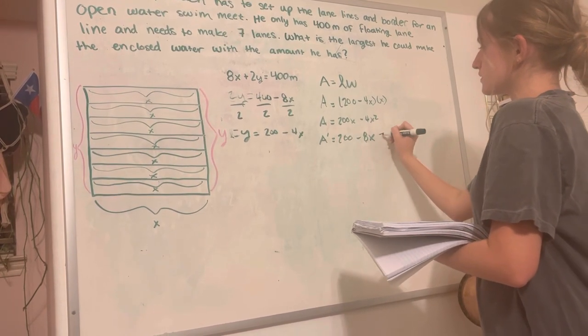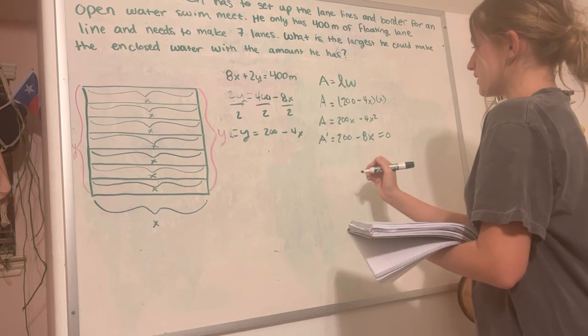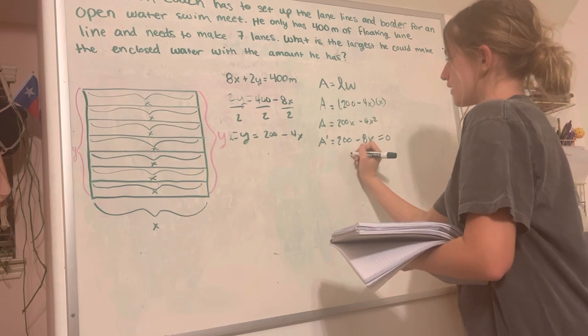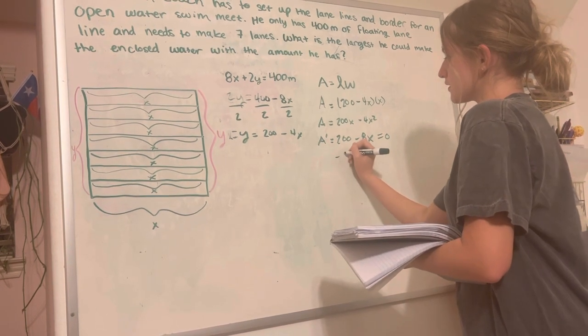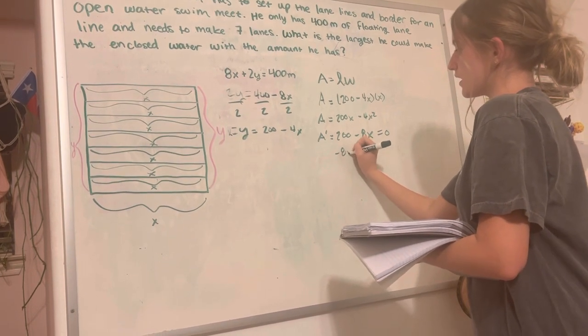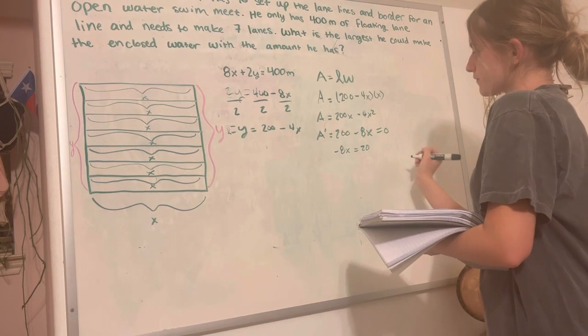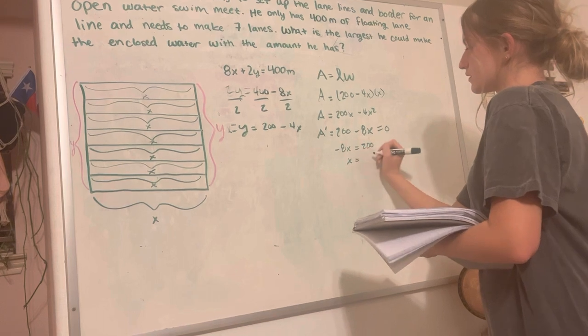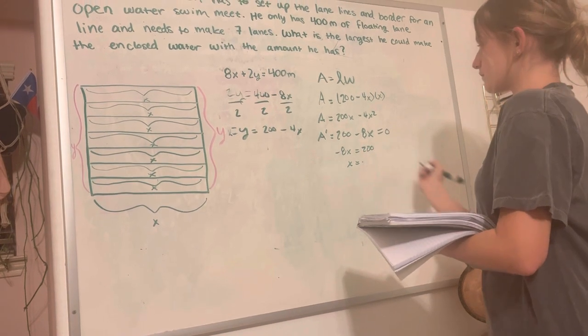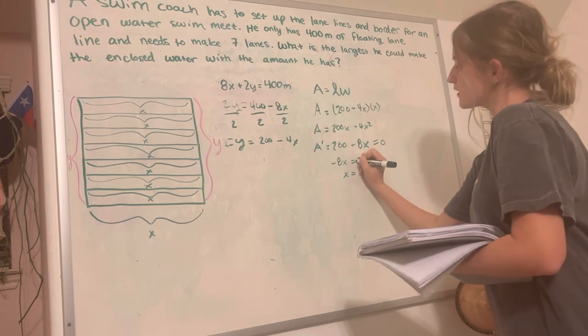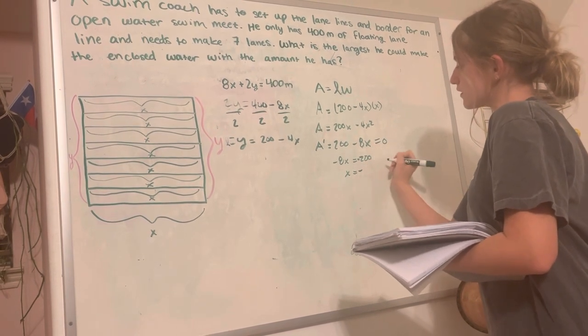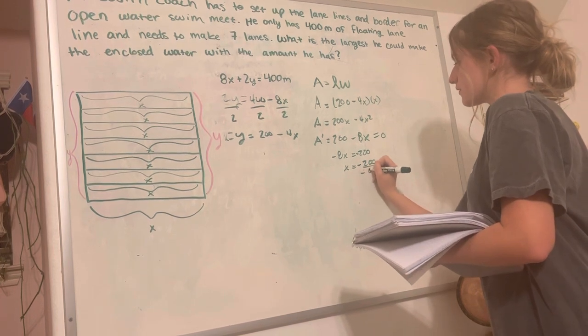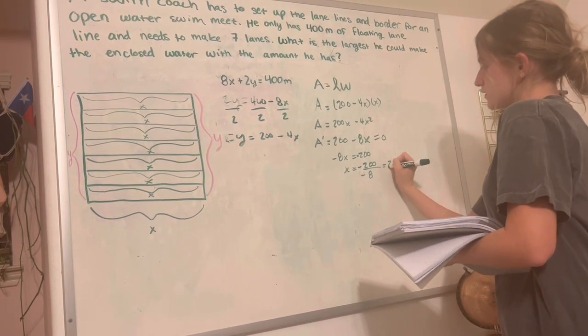To find the maximum, we set the equal to 0. So if we basically solve for x, it's going to be negative 8x is equal to negative 200. So x is equal to negative 200 over negative 8, which is going to be equal to 25.